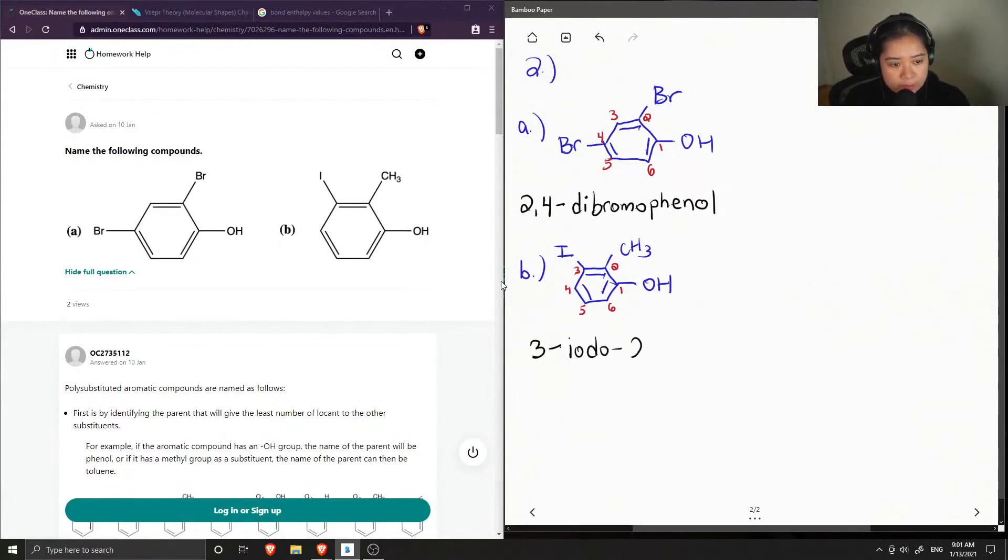And then on carbon 2, we have our methyl group. And then again, our parent is called phenyl. Okay, so let's see what the tutor said.